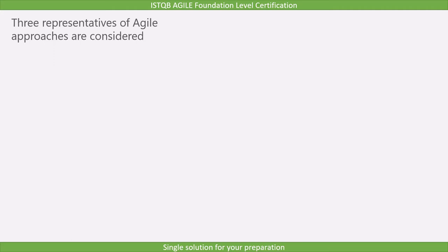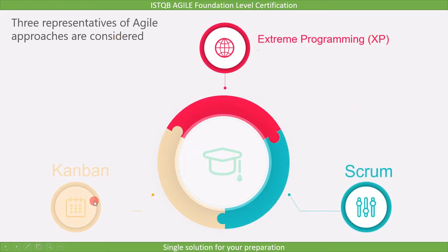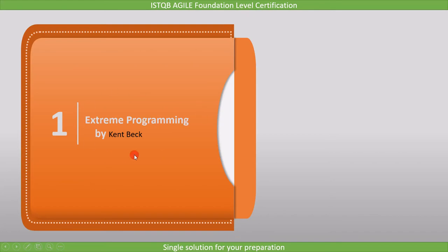In this syllabus, three representatives of agile approaches are considered: Extreme Programming, Scrum, and Kanban. In this lecture, we will cover Extreme Programming in detail, and in the upcoming lecture, we will cover Scrum and Kanban. Let's see what Extreme Programming is.